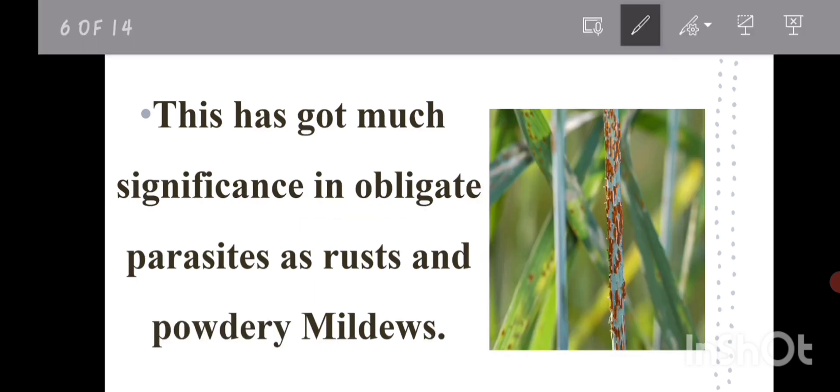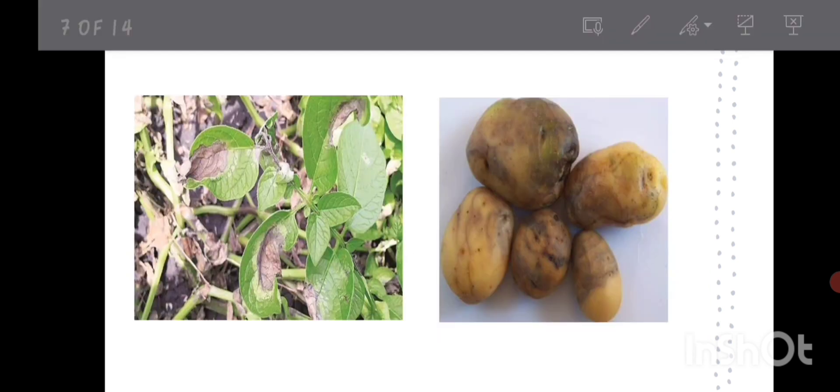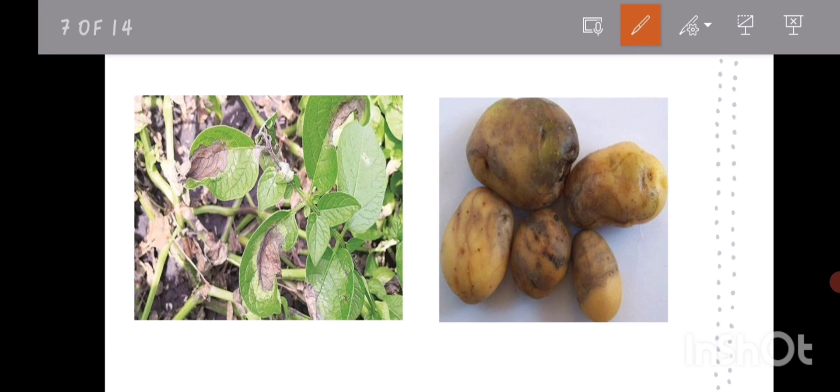Some examples include obligate parasites like rusts and powdery mildews that are easily seen in our surroundings. Other examples include late blight of potato. This is the hypersensitive reaction that occurs in the late blight potato leaf, and this one is the reaction that occurs in the tuber.